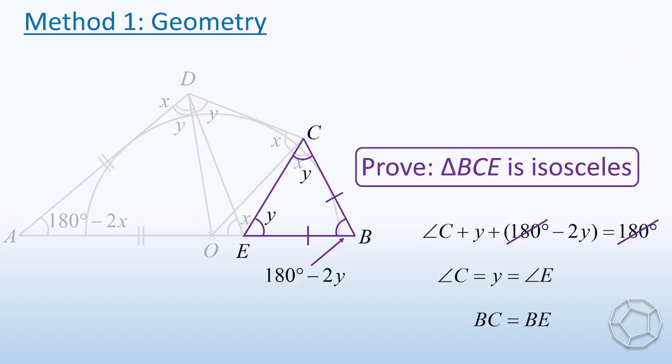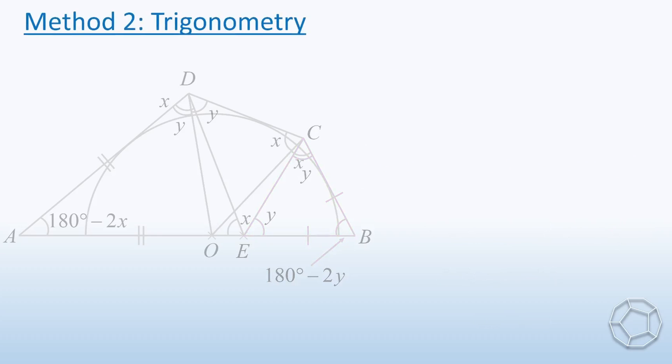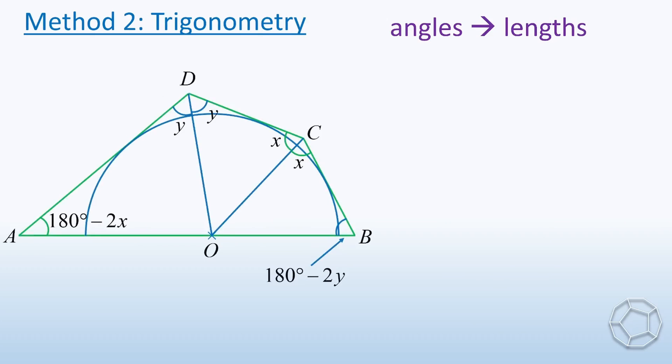Alright, how about the method by trigonometry? We still make use of the angles in method 1. But this time, we calculate the lengths directly. We let the two points of contact as F and G. So the radius OF is perpendicular to the tangent AD, and OG is perpendicular to BC.